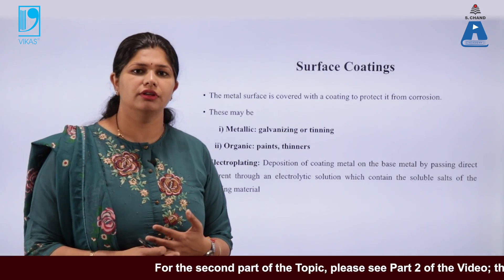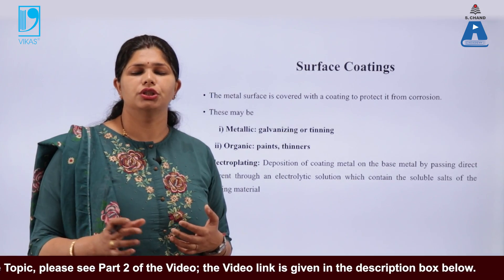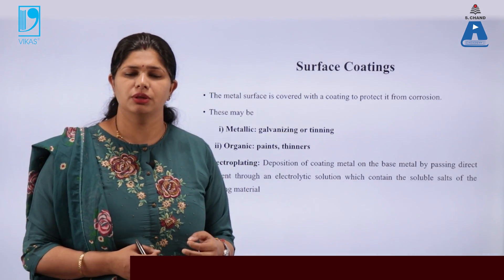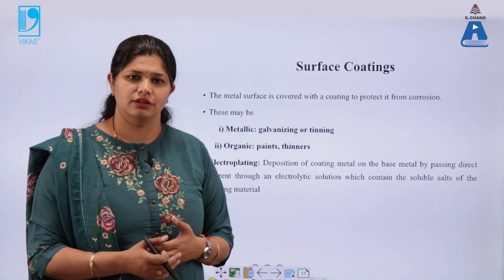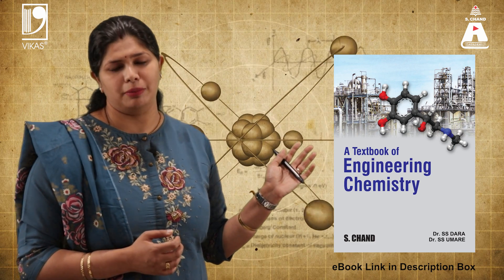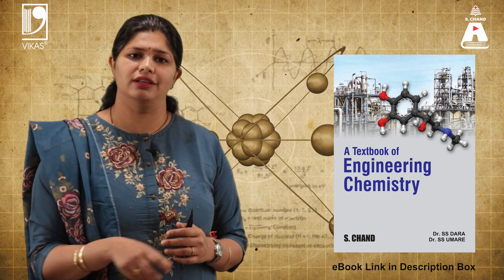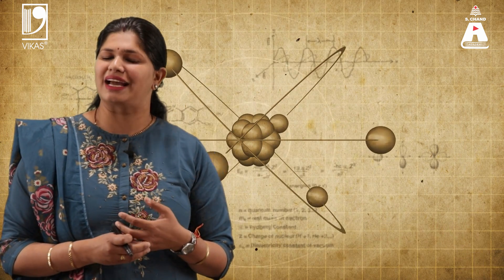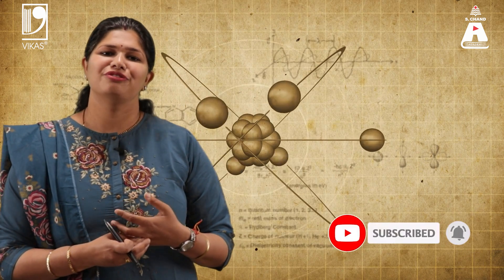In this part of the lecture, we have covered corrosion and its types. We have also covered the chemistry behind corrosion and how to remove it. In the next topic, we will cover metallurgy. To know more about this topic, you may refer to the book by S. Chand Publishing, the e-book link of which is given in the description box. If you found this video interesting, please like, share, and subscribe to the S. Chand Academy channel, and don't forget to press the bell icon for future updates.